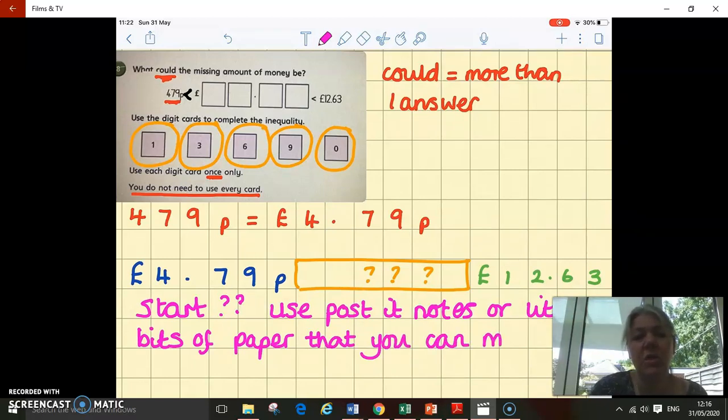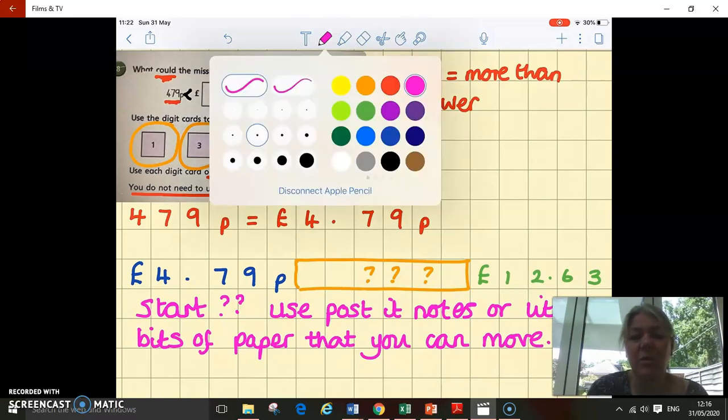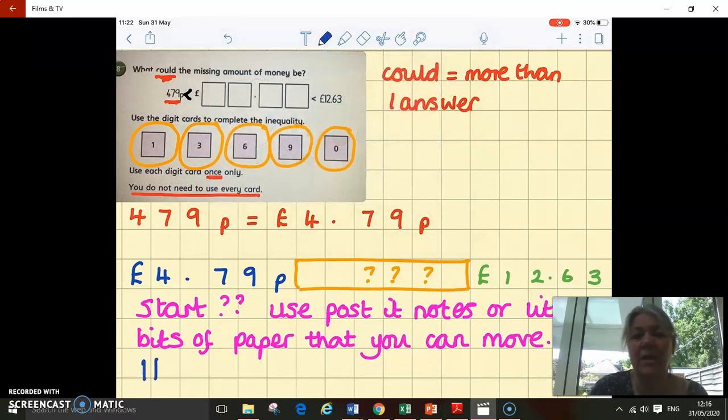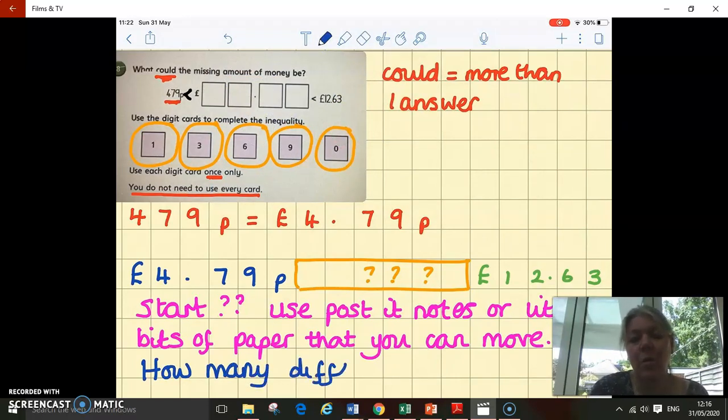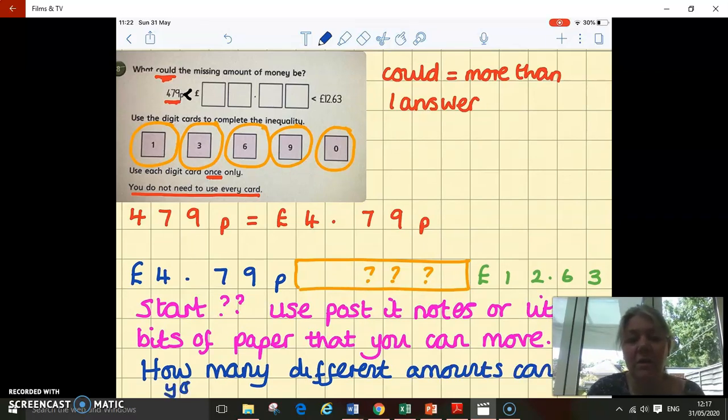I can see already that I can't use 36 as my first two digits, because that would be £36 something, and that's greater than £12. So think really carefully about what amounts are going to be between £4.79 and £12.63. How many different amounts can you find? And can you work systematically?